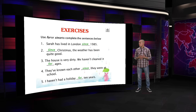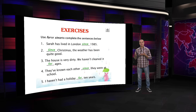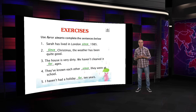Number five: I haven't had a holiday for ten years. We don't know exactly when was the definite point, which date was the last holiday. FOR just tells us about the duration of time. Practice: 'I haven't slept for years' or 'for months' — it's not clear when the last time was. But 'I haven't slept since last week' — the definite point is last week. Practice all those sentences.